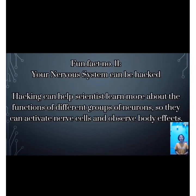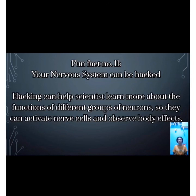Fun fact number eleven: Your nervous system can be hacked. Scientists are now developing ways to control brain cells with a flash of light through genetic altering. Hacking can help scientists learn about the functions of different groups of neurons. They can activate several brain cells at the same time and observe their effects on the body.